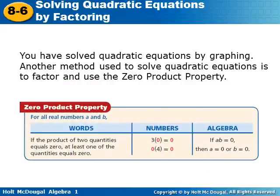For all real numbers A and B, if the product of two quantities equals zero, at least one of the two quantities equals zero. So anytime you're multiplying something and the answer is zero, one of the two things you're multiplying has to be zero. That's the only way you can get that answer.